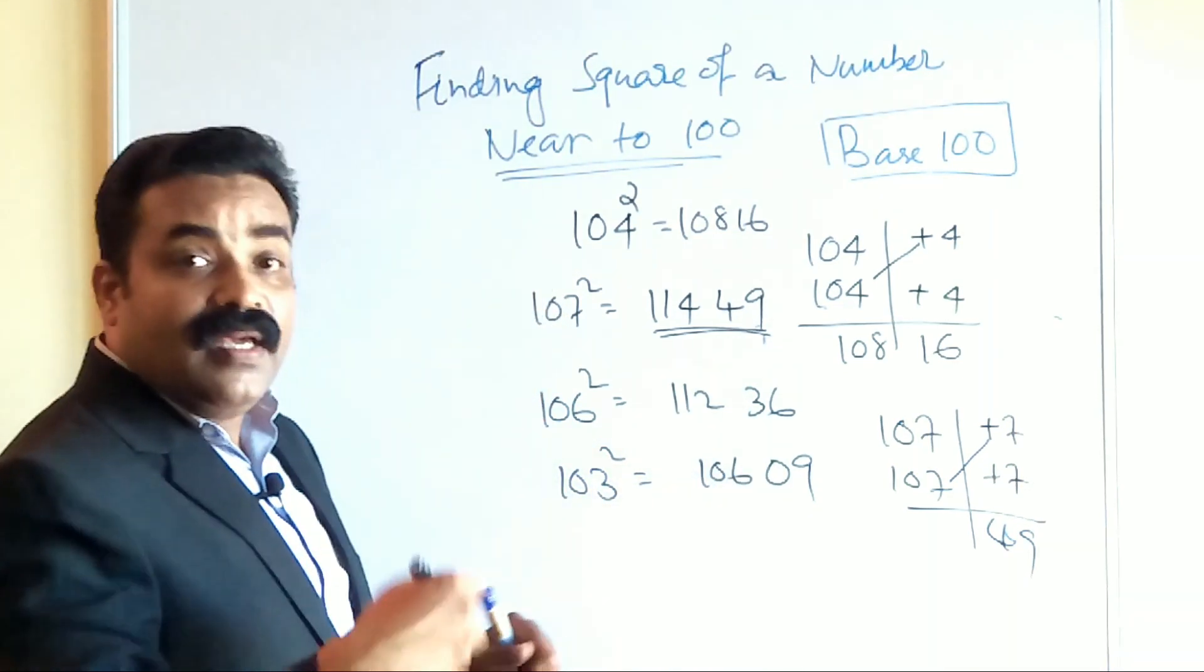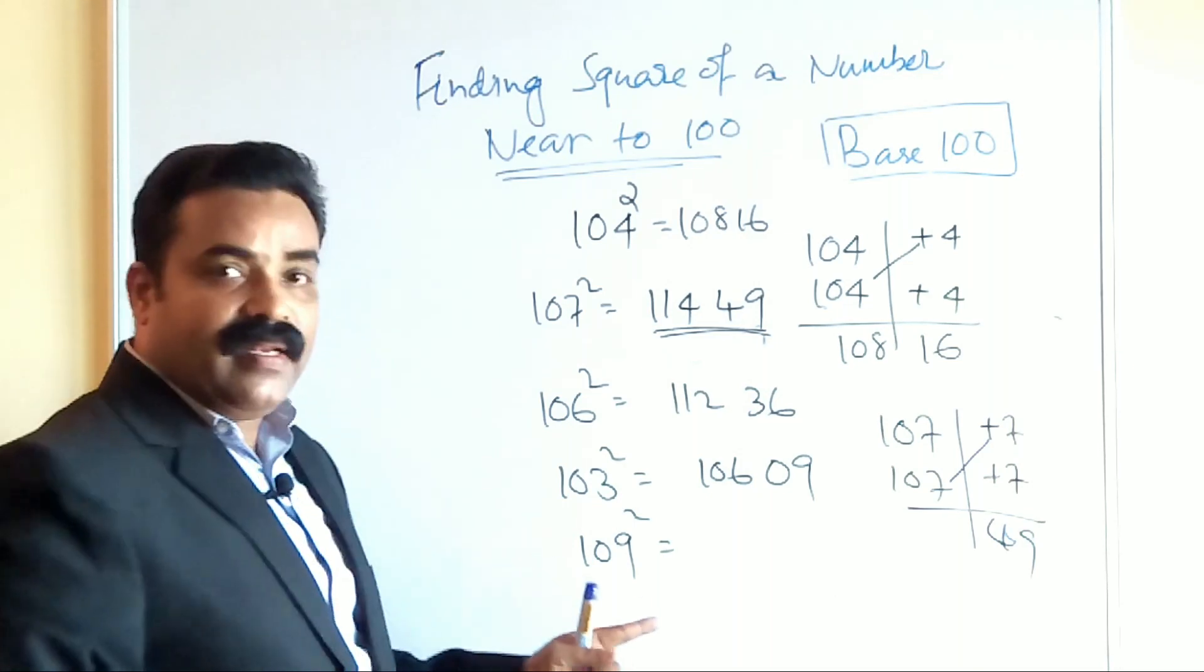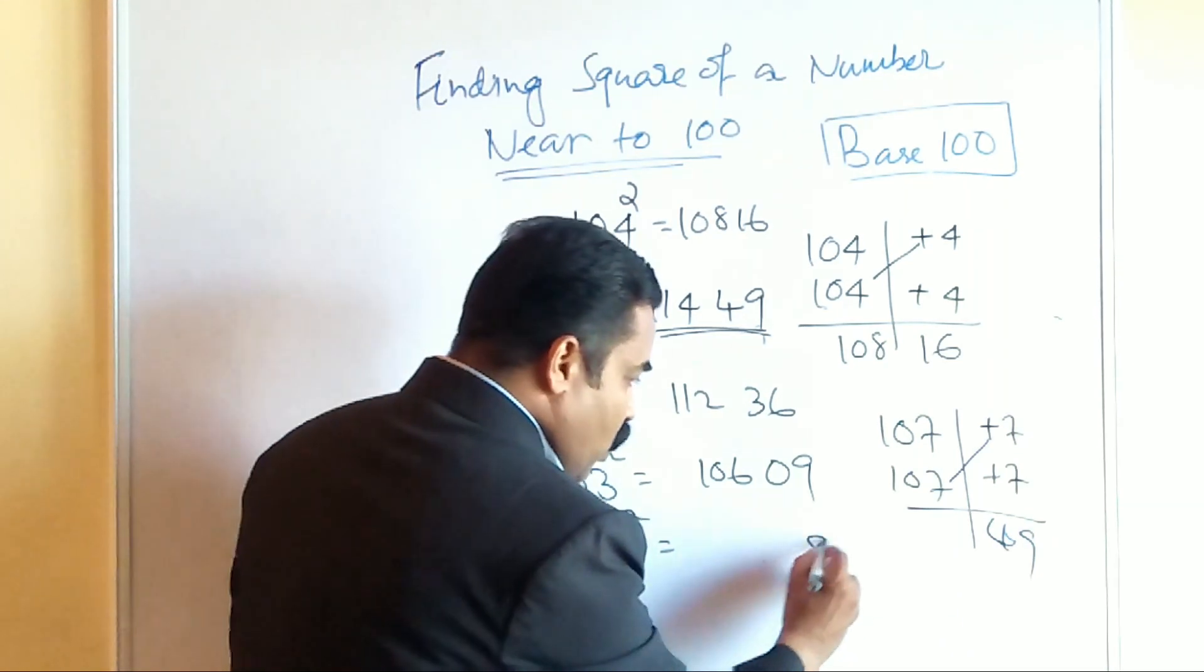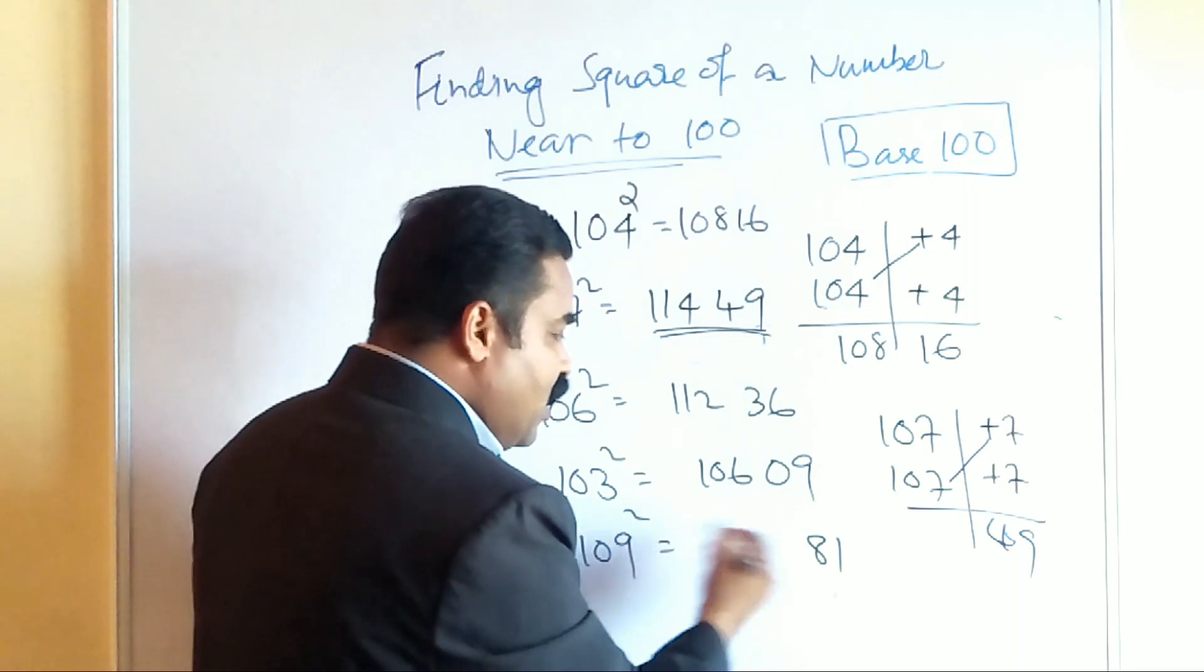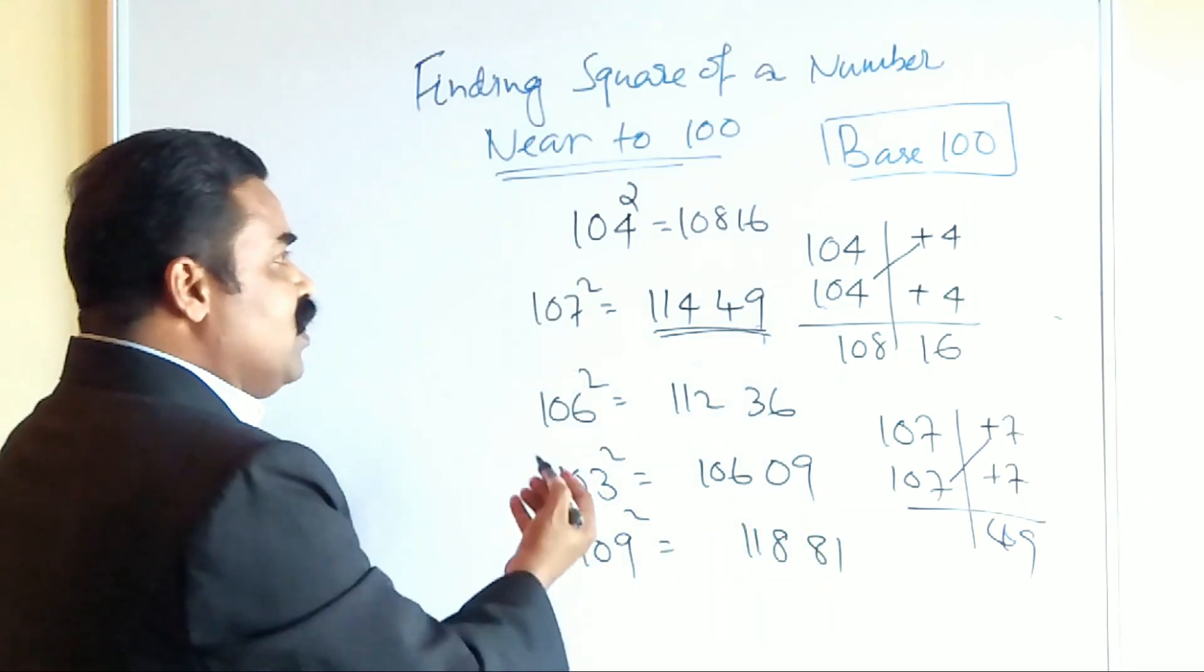You want to find out the square of 109. So what will be the square of 109? 9 times 9 is 81. 109 plus 9, so 109 plus 9 is 118. So this way you can continue.